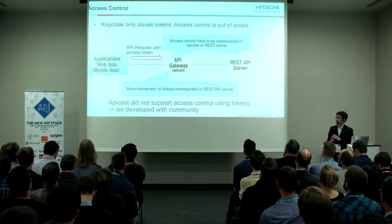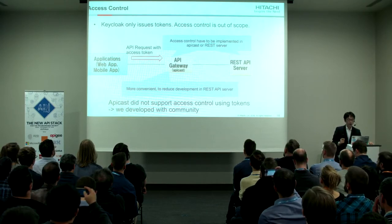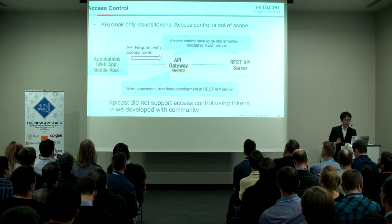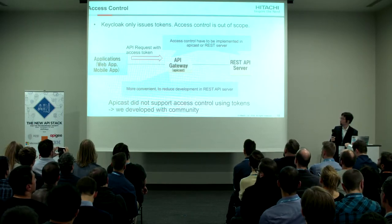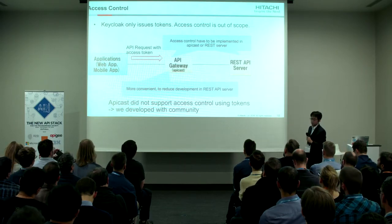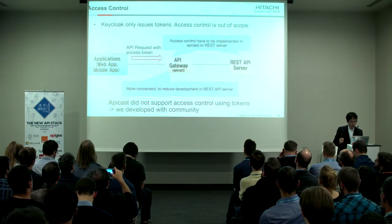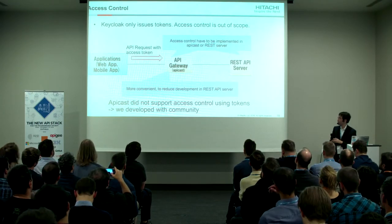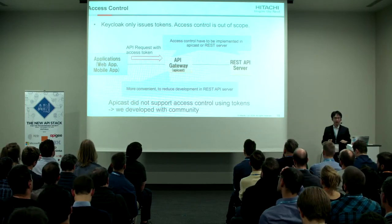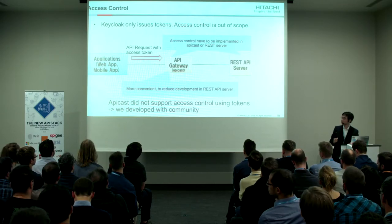The second problem is access control. Keycloak only issues tokens and access control is out of scope for Keycloak. So we have to handle access control in the API Gateway. However, the 3Scale API Gateway called Apicast did not support access control using the Keycloak access token. So we developed this with the community.